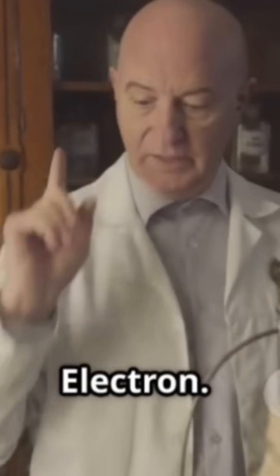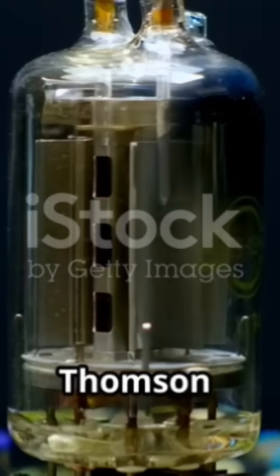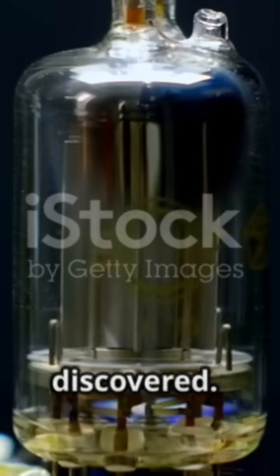Section 4: Thompson and the Electron. In 1897, English physicist J.J. Thompson made a groundbreaking discovery that revolutionized our understanding of the atom. Through his experiments with cathode rays, Thompson identified the electron, the first subatomic particle to be discovered.